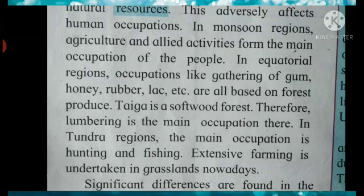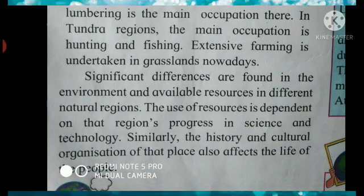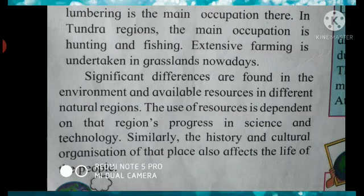In tundra regions, the main occupation is hunting and fishing. These are all the different regions and their different occupations. Extensive farming is undertaken in grasslands nowadays. Significant differences — meaning noticeable differences — are found in the environment and available resources in different natural regions. The use of resources is dependent on that region's progress in science and technology. Similarly, the history and cultural organization of that place also affects the life of the people.